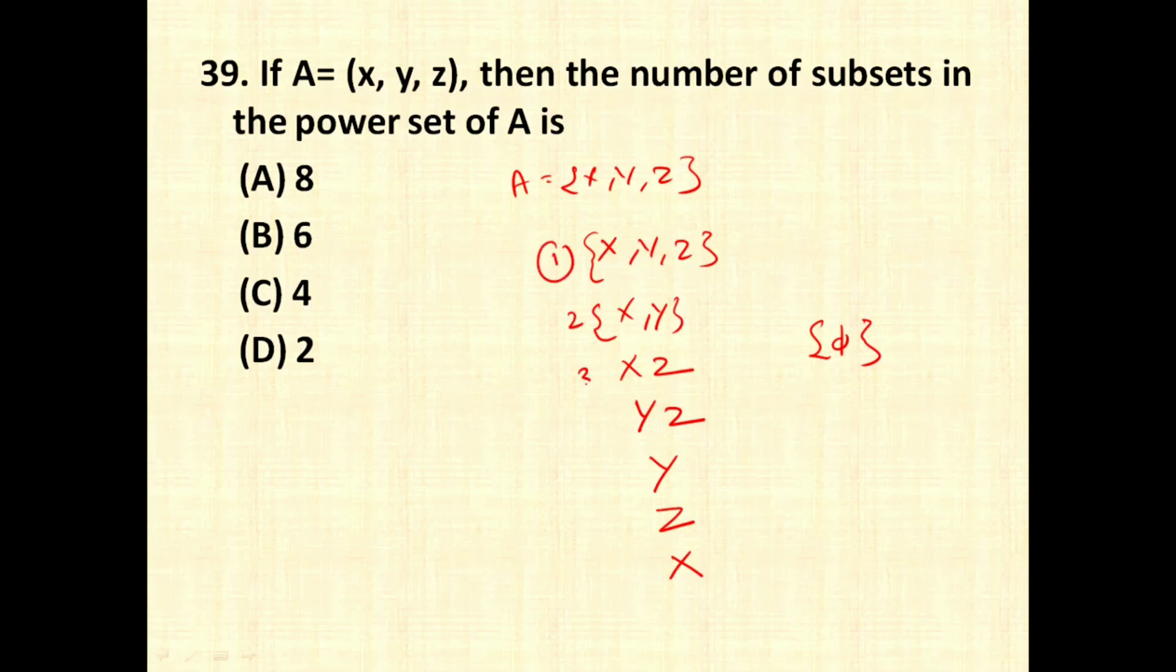So how many subsets are possible? 1, 2, 3, 4, 5, 6, 7 and 8. So option A, 8 is the correct answer for this question.